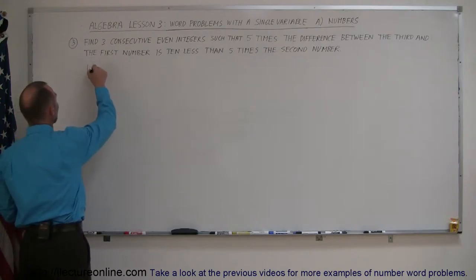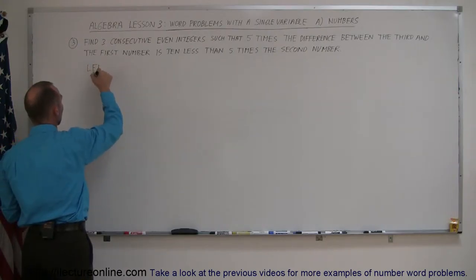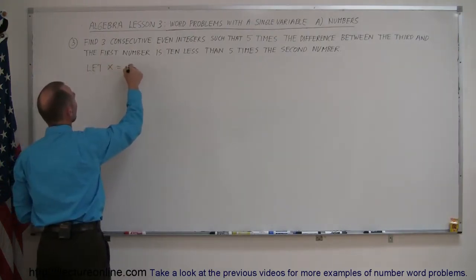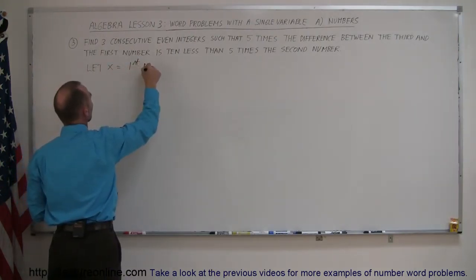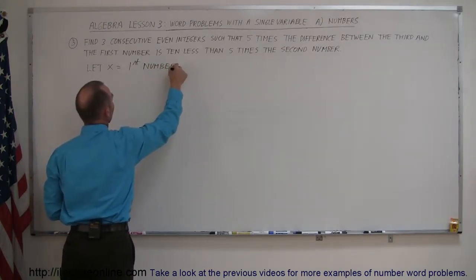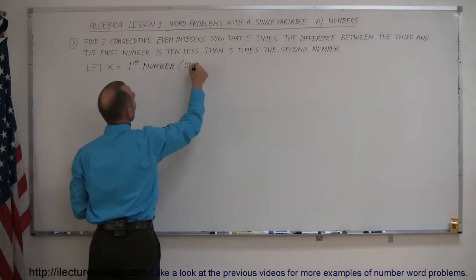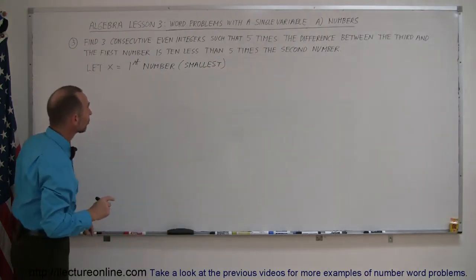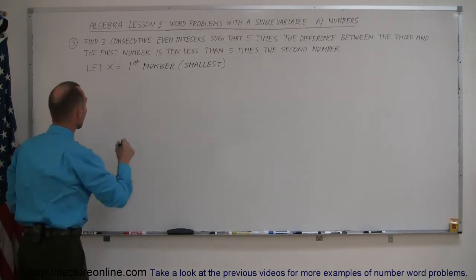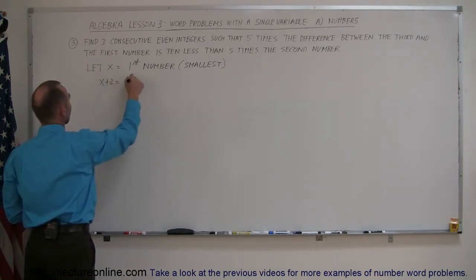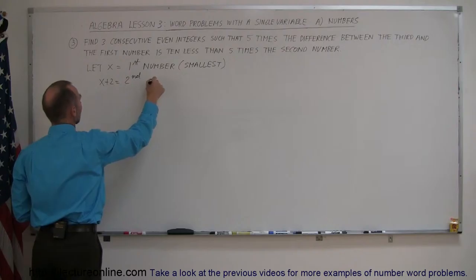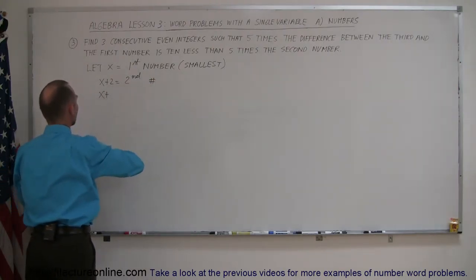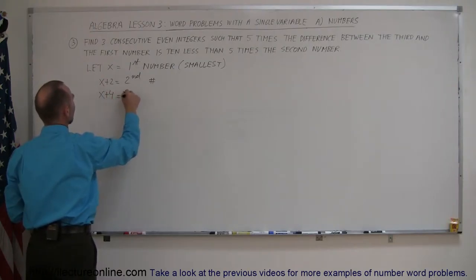We're going to let x be the first, or the smallest number. Let x equal the first number, which is the smallest. Since they're consecutive even integers, the next one is two more, so x plus 2 is the second number. And then x plus 4 — two more than that, or plus 2 plus 2 — so x plus 4 is equal to the third number.